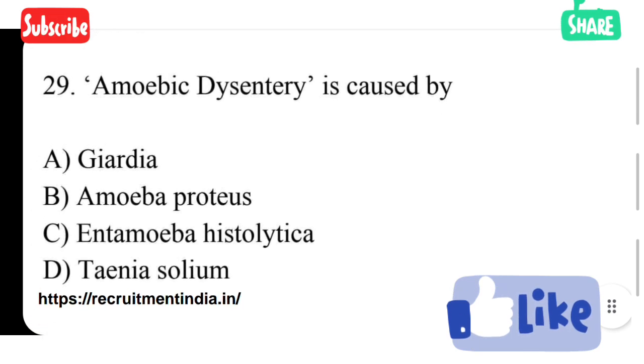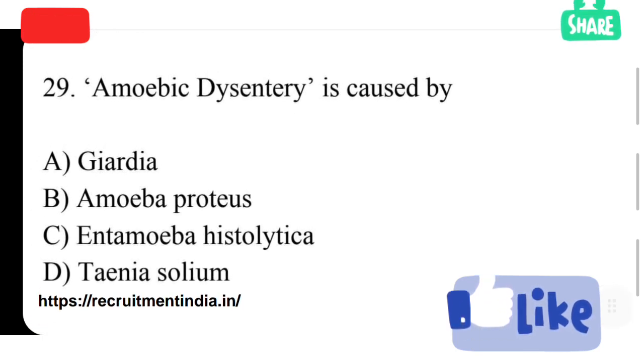Amoebic dysentery is caused by option A giardia, option B amoeba, option C protozoa, option D entamoeba histolytica, option E tinea sodium. The causative organism of amoebic dysentery is entamoeba histolytica.